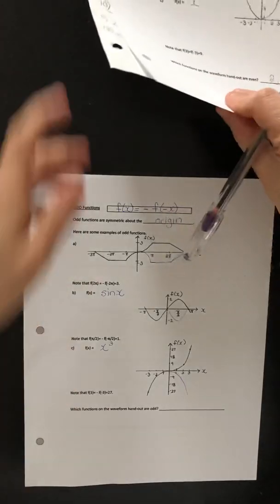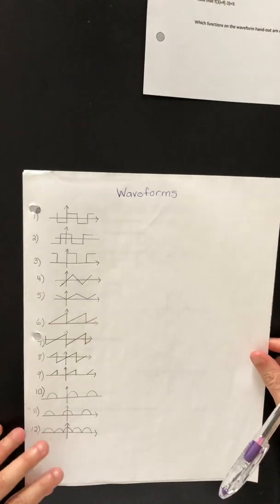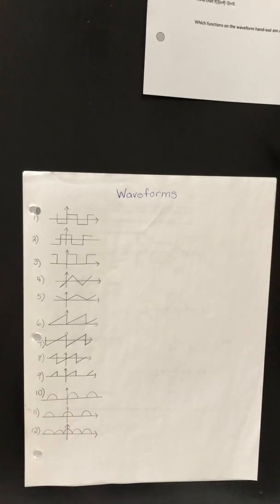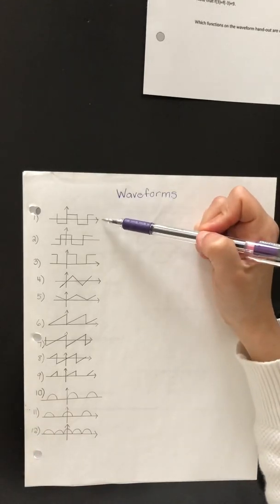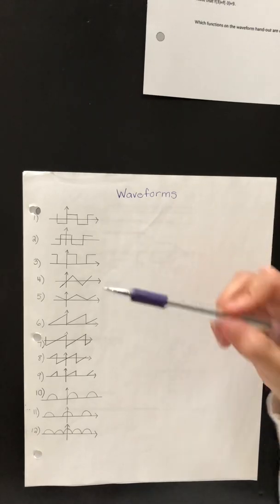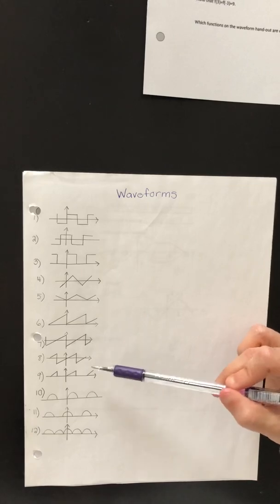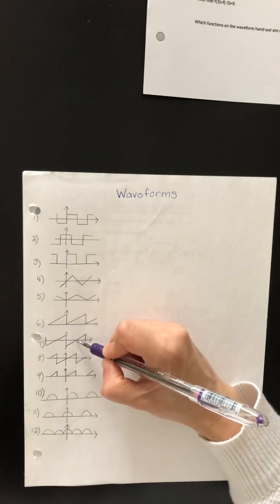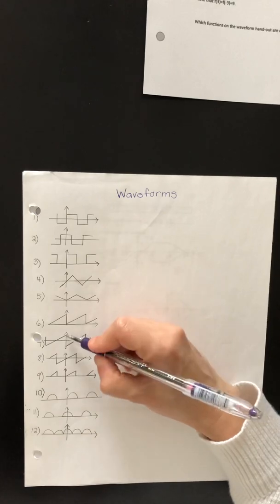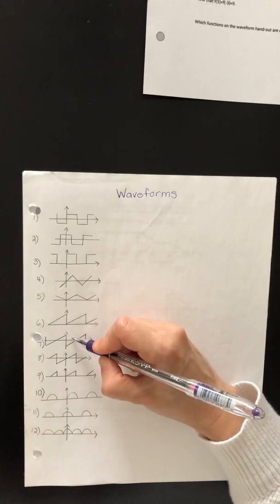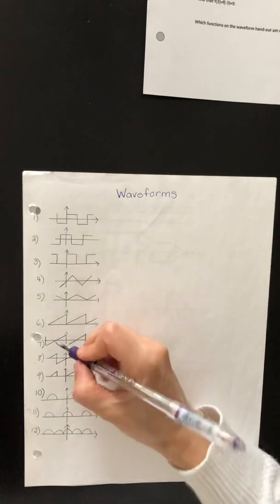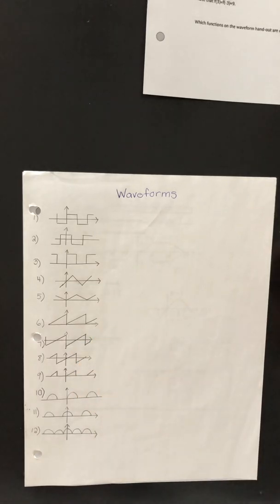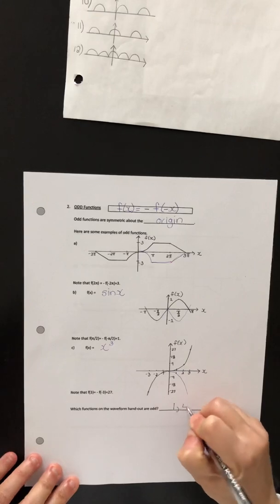Let's go and look at these 12 waveforms and select those that we think are odd. Waveform 1, waveform 4, and waves 7 and 8 are all odd. Here's a quick example — here's a piece of waveform 7. If we flip it first over the horizontal axis it would look like a triangle like that, then flip it over the vertical axis and it would superimpose right here. So you can take some time to check those for yourself. Let's list at the bottom: 1, 4, 7, 8.